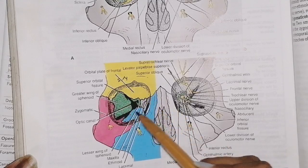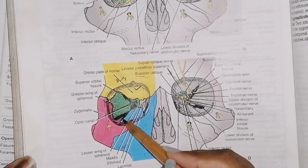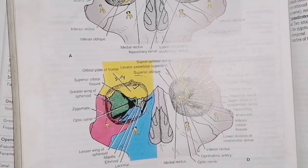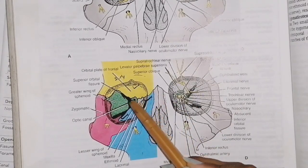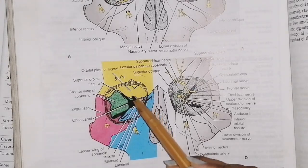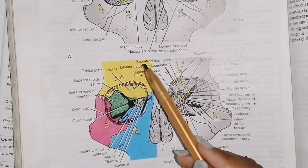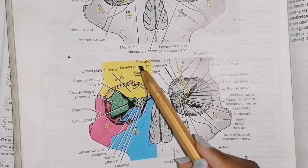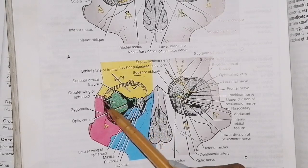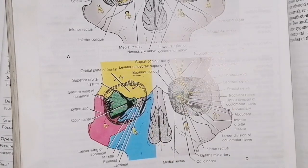After the margins, we will talk about the walls and how they are made. There is a superior wall, lateral wall, inferior wall, and medial wall. The superior wall is made from the frontal bone. The lateral wall is made from the zygomatic bone and the greater wing of the sphenoid.